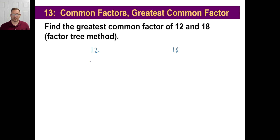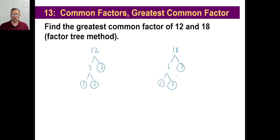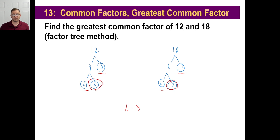I'm going to do 12 over here, then 18 over here. 12 breaks down into 4 and 3 — that's prime. And then 4 breaks down into 2 and 2. 18 breaks into 6 and 3. Then that's going to be 2 and 3. Now your job is to find which numbers match both of those. They both have a 2, so let's pull that out. They also both have a 3, so let's pull that out and multiply. They don't have anything else in common, so you stop. 2 times 3 is 6 — that's your greatest common factor.